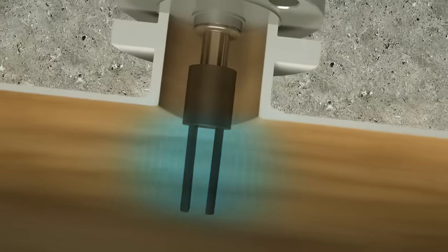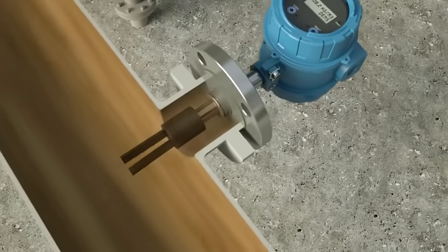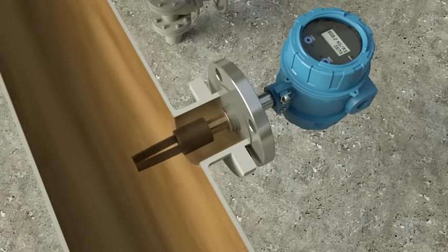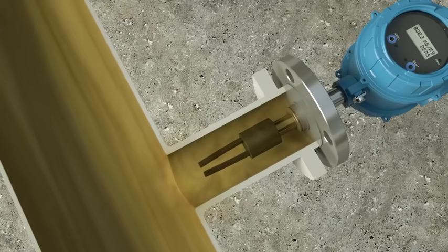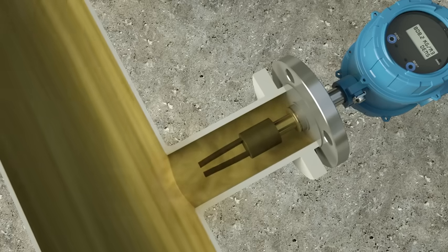The fork density meter accurately measures density in many different installations. Shown here is a free stream installation for low velocity process fluids. Shown here is a T-piece installation for higher velocity process fluids.